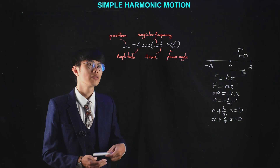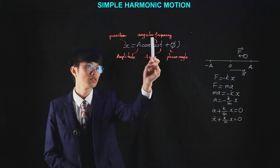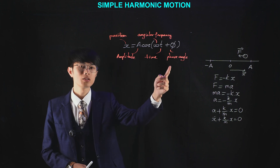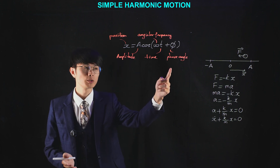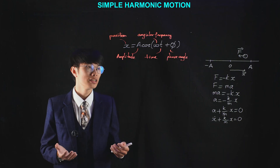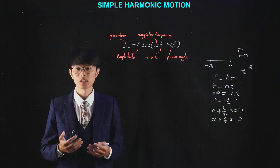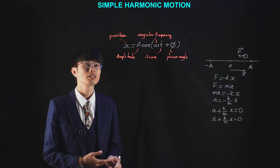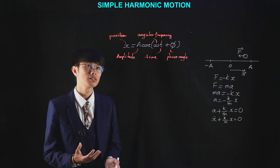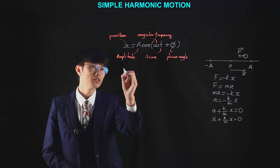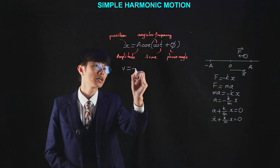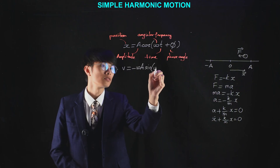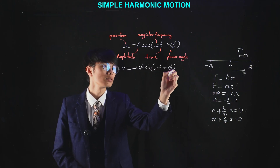We've known quantities like position, amplitude, angular frequency, and time. But what is the phase angle? The phase angle represents the state of the object — like where it is, its position, and where it's going, its velocity. The velocity of an object is the first derivative of its position with respect to time, so v equals minus omega A sine of (omega t plus phi).